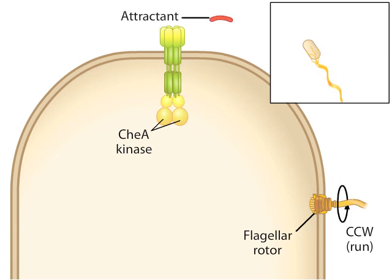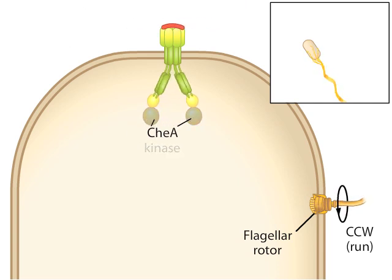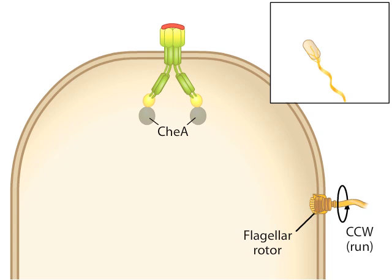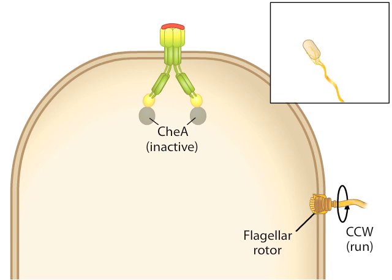When an attractant binds to the receptor, the cytoplasmic domain of the receptor changes conformation. The conformational change thereby inactivates CheA. In this state, the cell is detecting a chemical attractant, deactivating CheA, and maintaining its straight-ahead run.